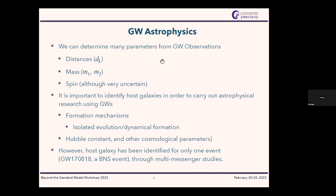Spin is a very important parameter in understanding the origin of the sources. It is also very important to identify host galaxies, since all these sources come from external galaxies. In order to carry out astrophysical research — including understanding formation mechanisms, measuring the Hubble constant, and other cosmological parameters — we need to identify host galaxies, either individually or statistically.